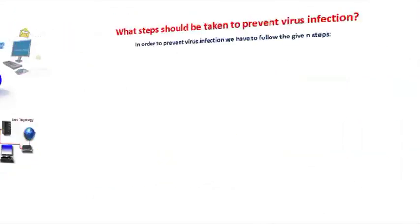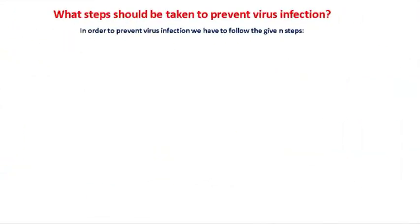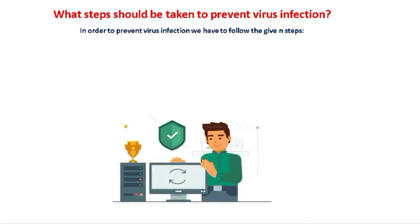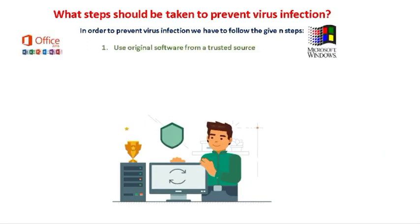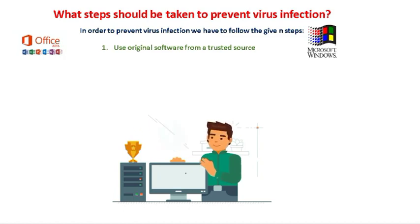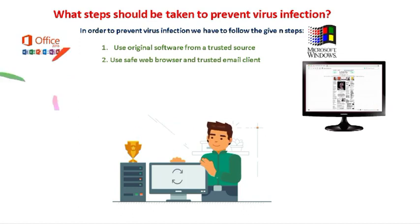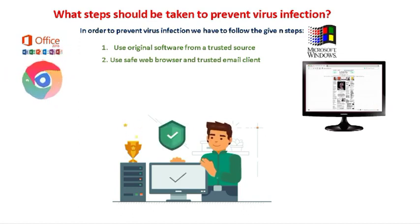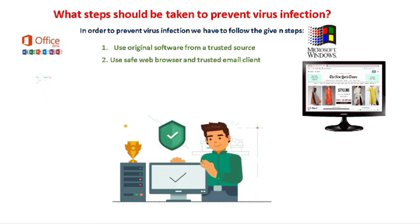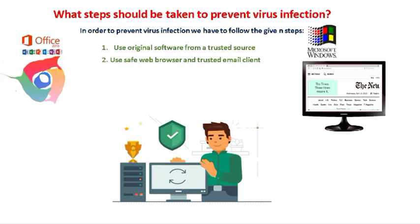What steps should be taken to prevent virus infection? First, use original software from a trusted source. Whenever you download any software from the internet, check that the site is trusted and secure. Next, use a safe web browser and trusted email client, like Gmail or Yahoo.